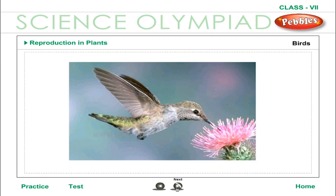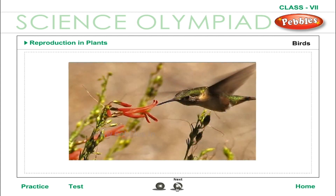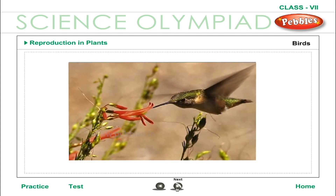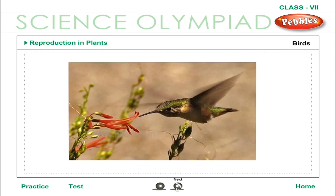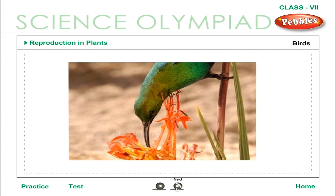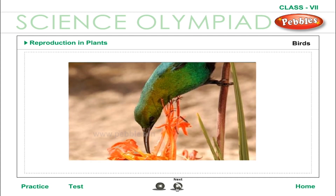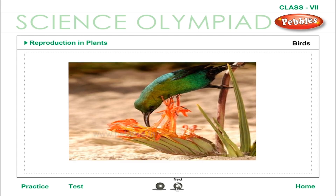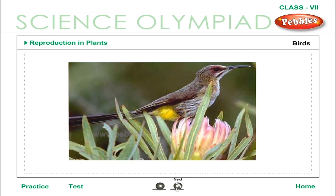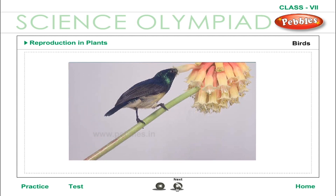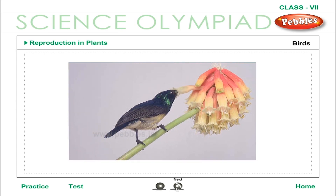Birds: Bird-pollinated flowers are much more common than mammal-pollinated flowers. Two large groups of birds which pollinate flowers are the sunbirds of Africa and Asia and the hummingbirds of the Americas. Both groups have long beaks that allow them to reach inside the petal tubes. Hummingbirds hover in front of flowers while drinking nectar; sunbirds sit on the flower stalk to collect nectar. Bird-pollinated flowers often have red, orange or yellow petals and are not usually scented, as most birds do not have a well-developed sense of smell.